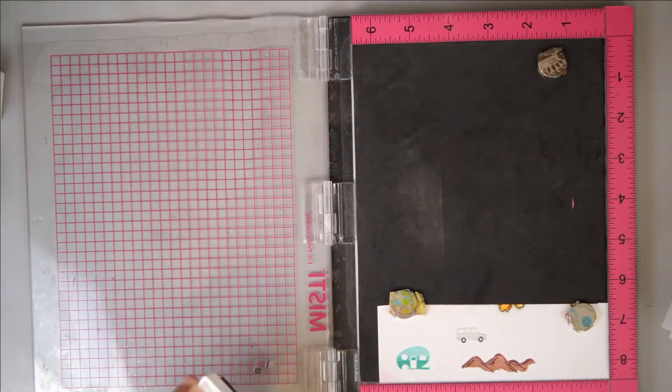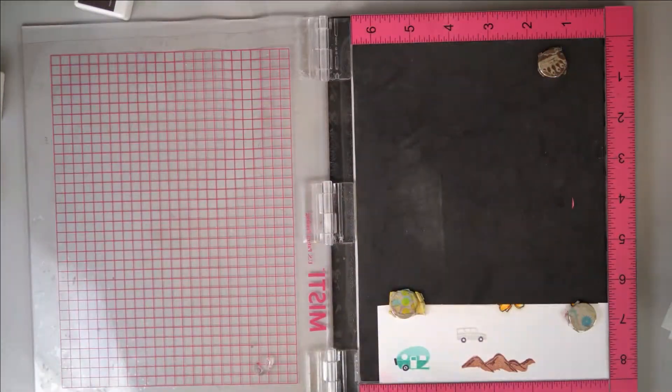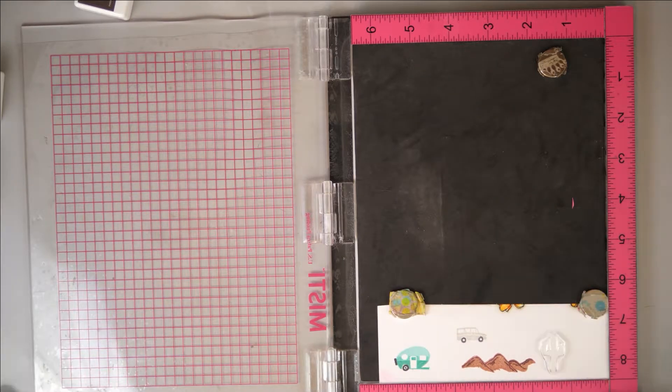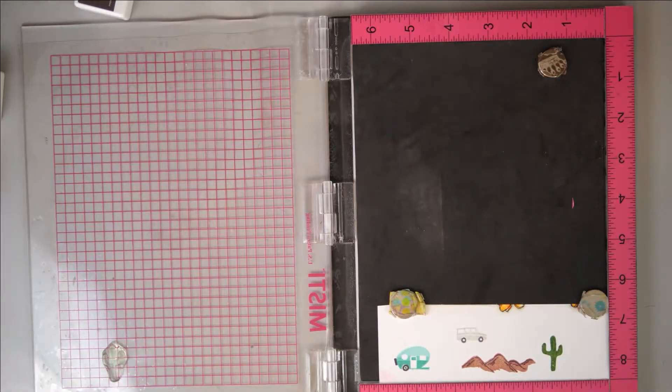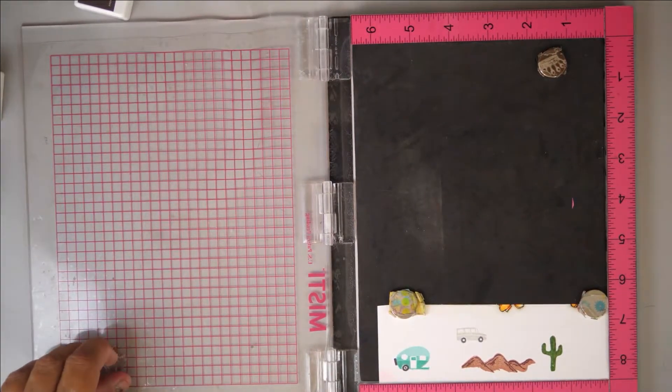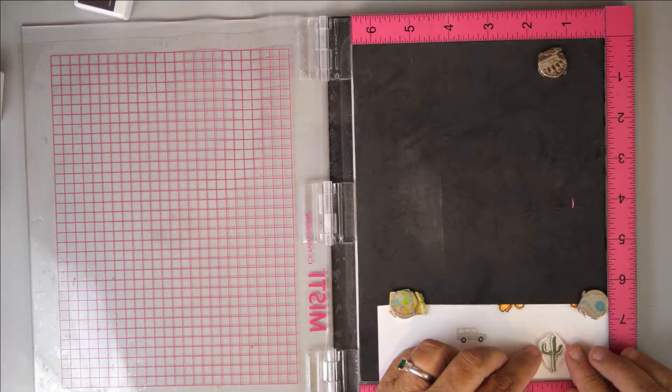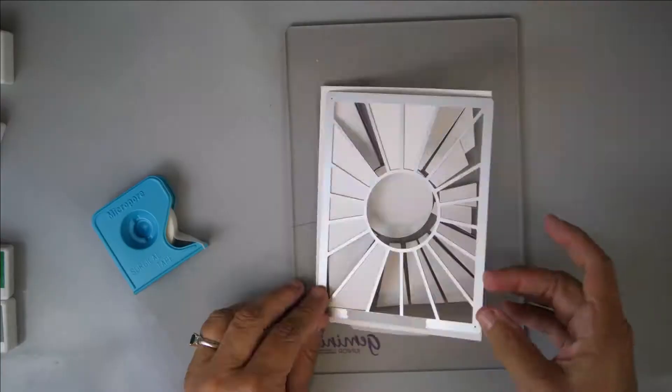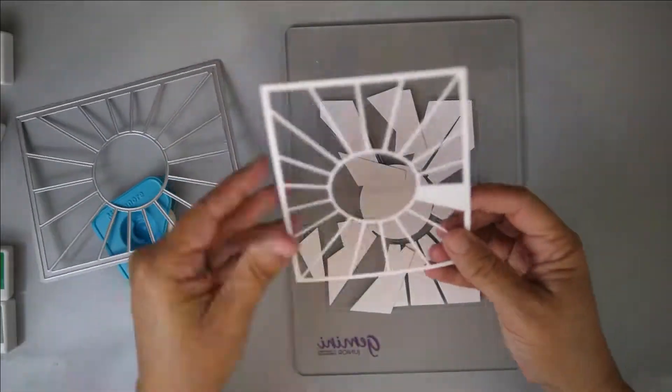Then I am going to take another piece. All of this is stamped on Neenah Solar White 80 pound cardstock. I will take another piece that is cut down to four and a quarter by five and a half and I will use the Sunburst die and I will cut that out and I will have a nice little white frame that I can use between each of those different rays. Then I'm going to pop those pieces right back in after I glue it down and I will begin assembling my card.